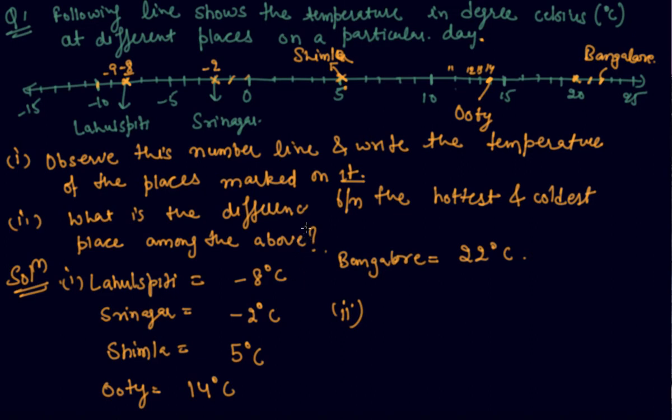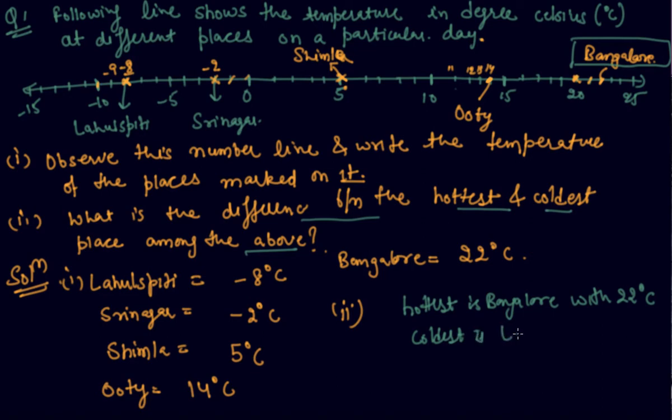What the examiner is asking is, what is the difference between the hottest and the coldest place among the above? So the hottest among these will be Bangalore because it is lying on the rightmost side of the temperature range. So the hottest is Bangalore with 22 degrees Celsius temperature, and the coldest is Lahulspiti with -8 degrees Celsius.